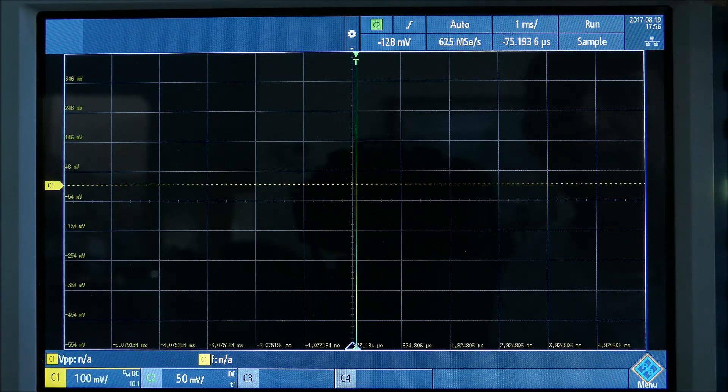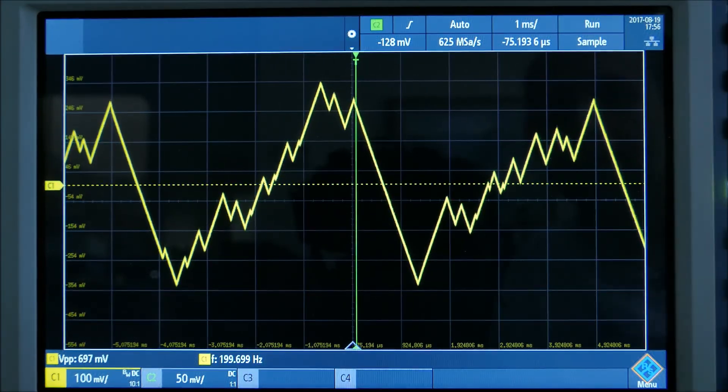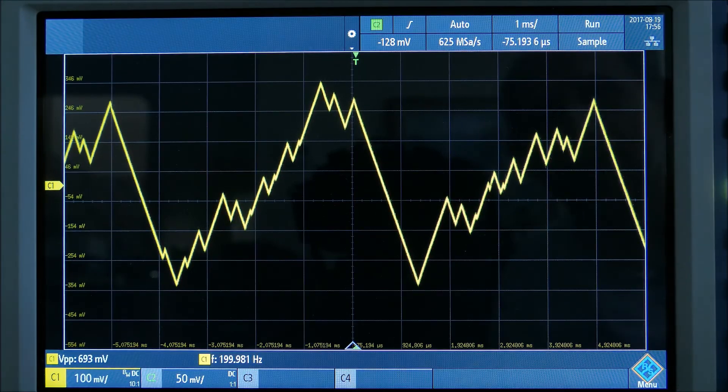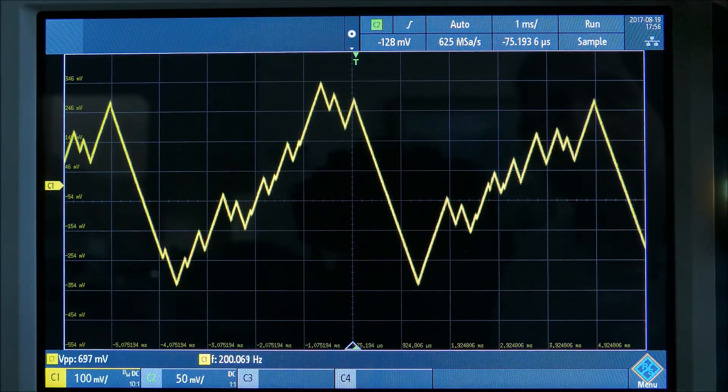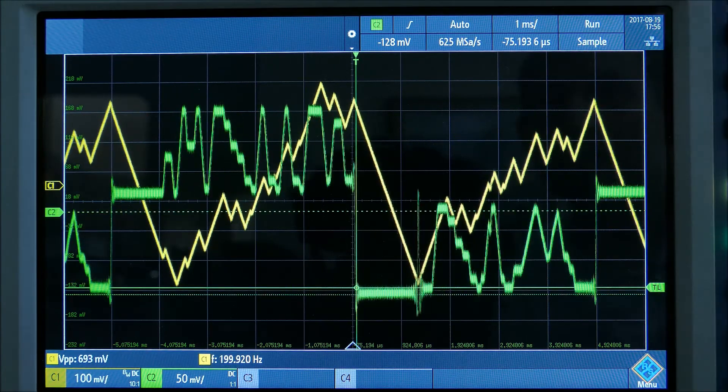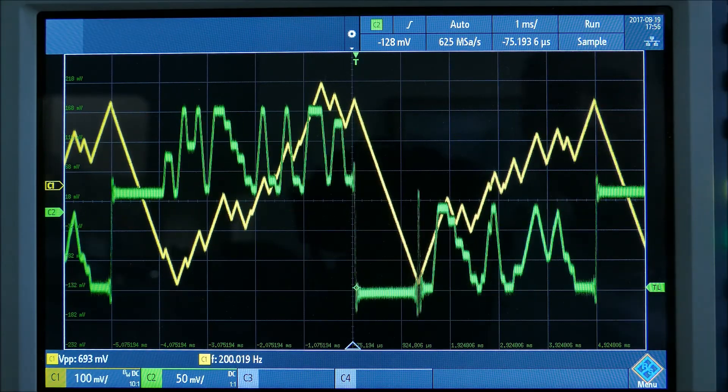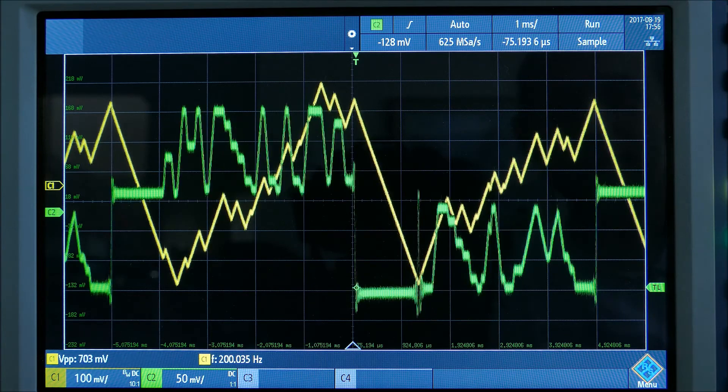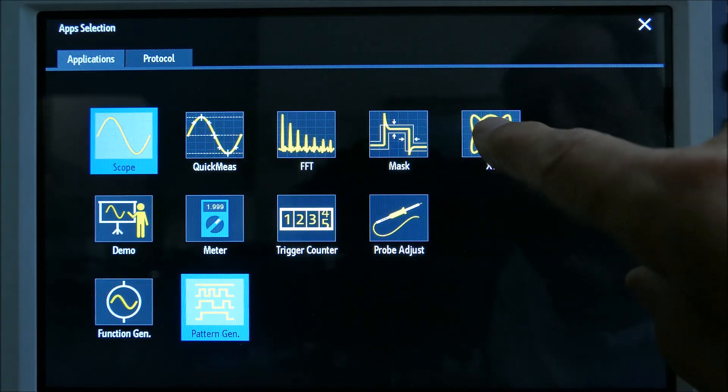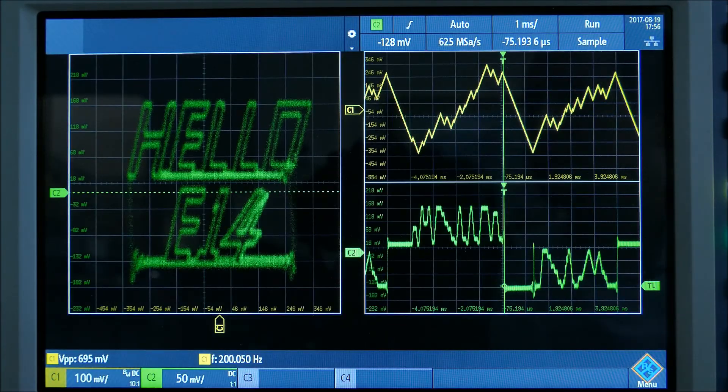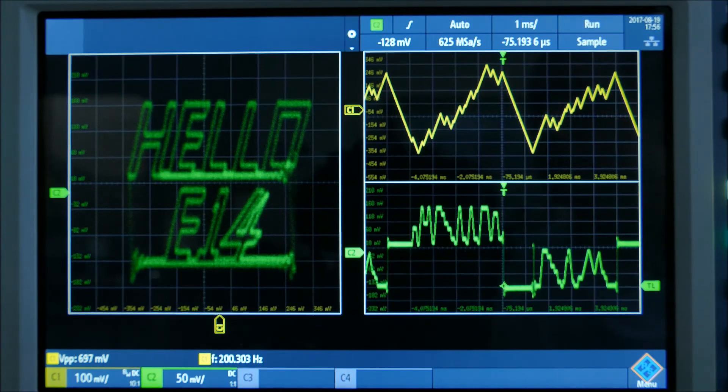So I'm going to turn on channel one and you can see a fancy triangular waveform, and I'll turn on channel two. This is a stereo and you can probably guess where I'm going with this. This oscilloscope has the ability to plot these things as an XY, so I'll just pick the XY menu and there we go, hello element 14.